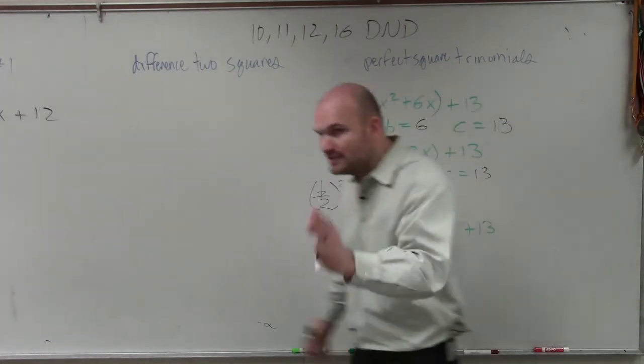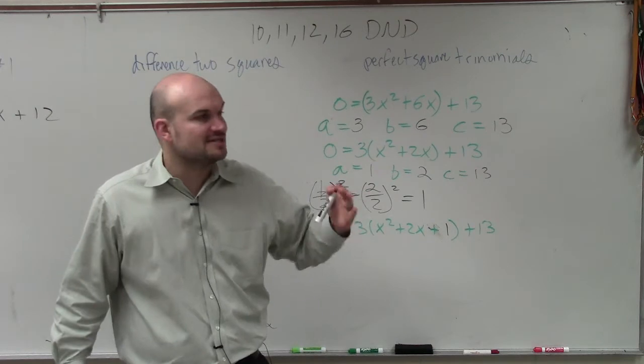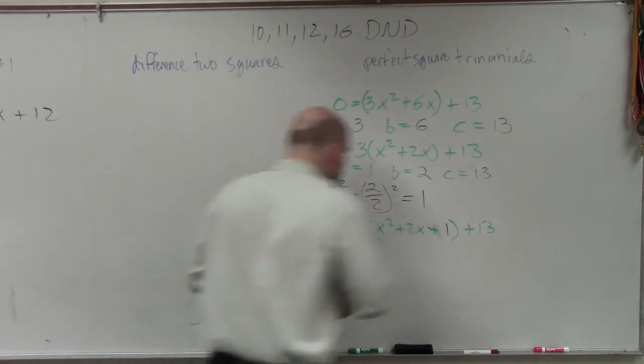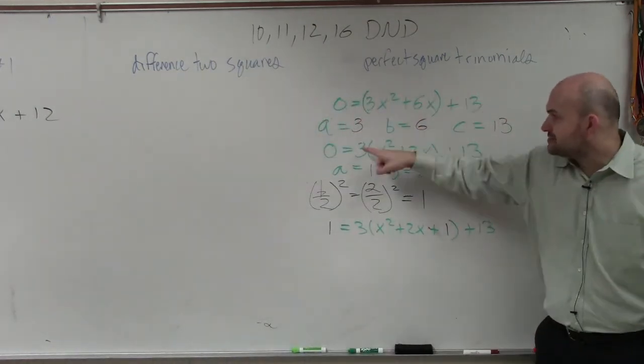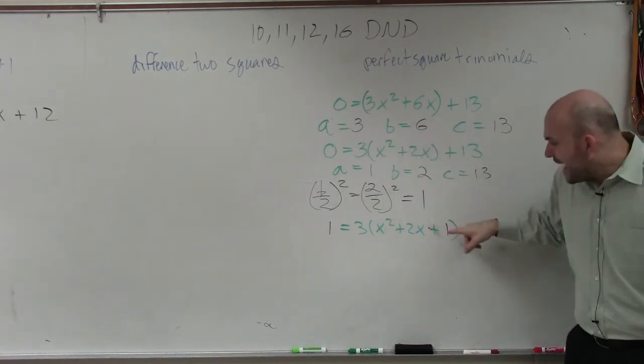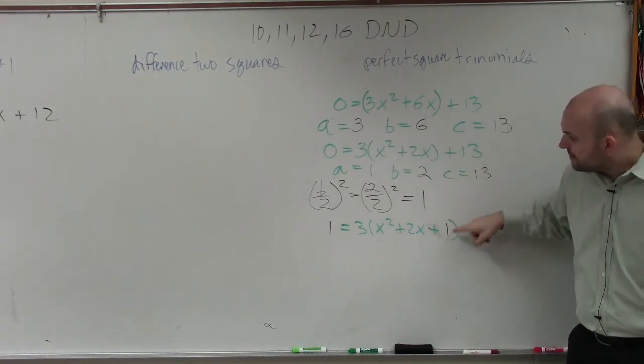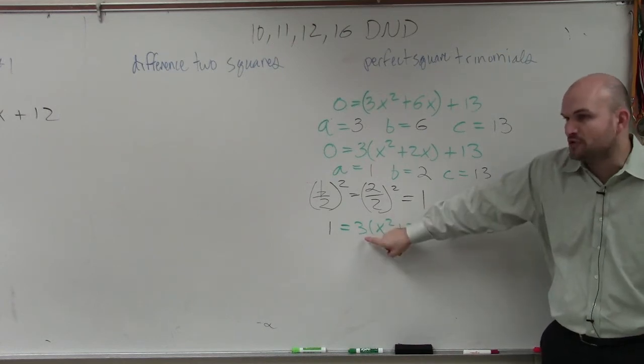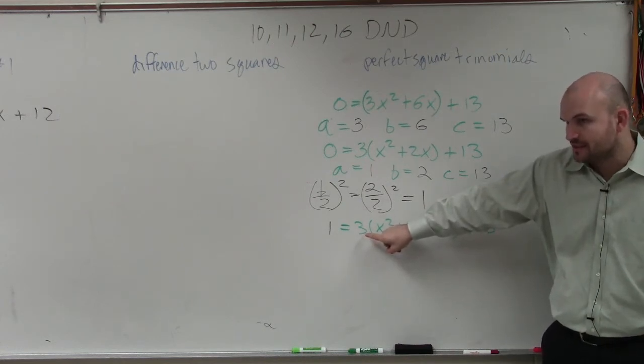However, the only thing, the biggest difference now, ladies and gentlemen, that I need you guys to understand is when you factor something out, this 3 is multiplied by both of these, right? So when you add a 1 inside the parentheses, that 1 is also being multiplied by the 3, correct? So really, I didn't add a 1 onto this side. I added a 1 that's multiplied by a 3.